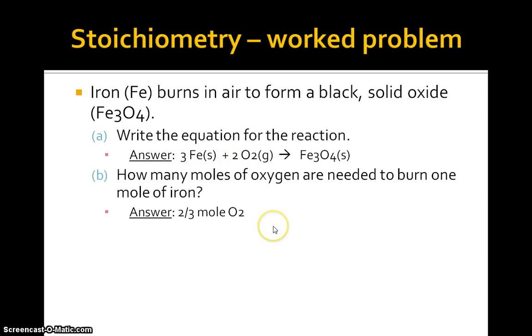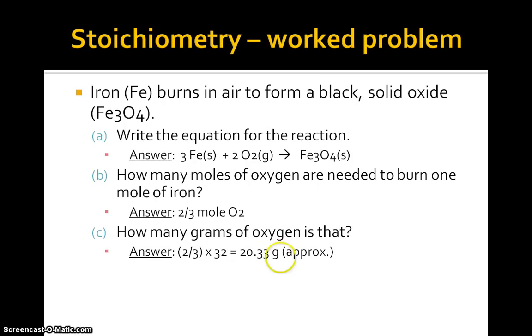(c) How many grams of oxygen is that? Now remember, oxygen we're not considering to be O, it's O2, so the 16 that's on your periodic table has to be multiplied by two to get 32 grams. So it's not 2/3 of 16, but it's 2/3 of 32, and that's 20.33 grams approximately.